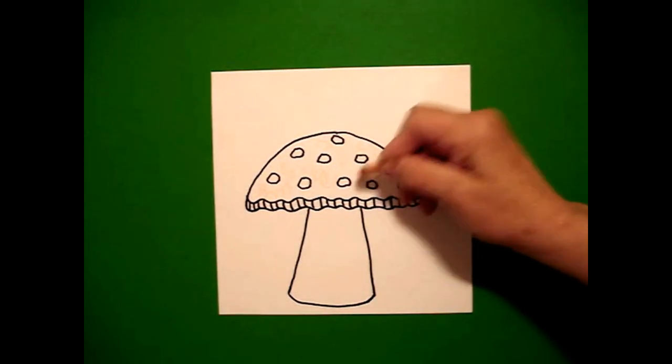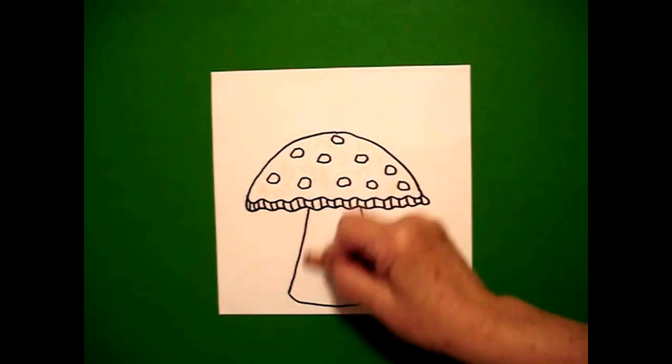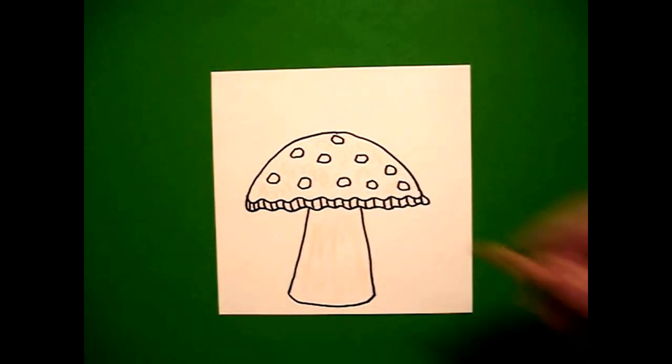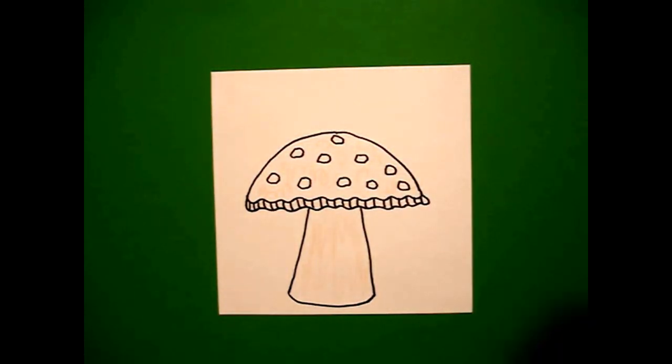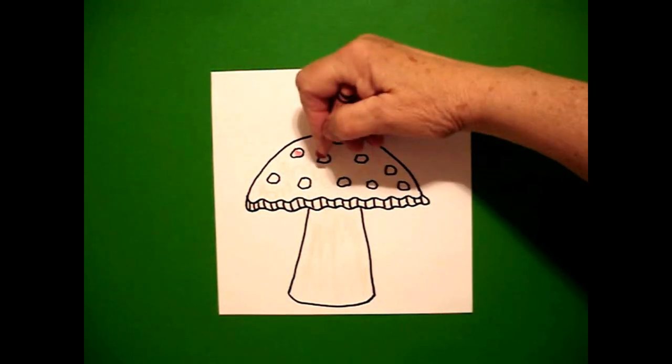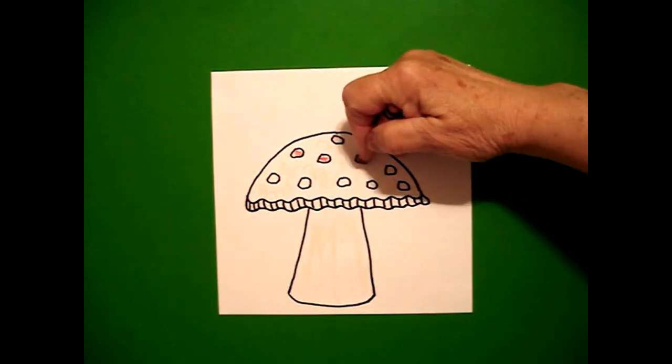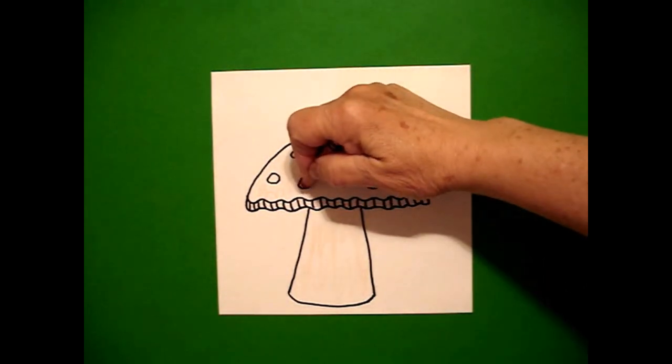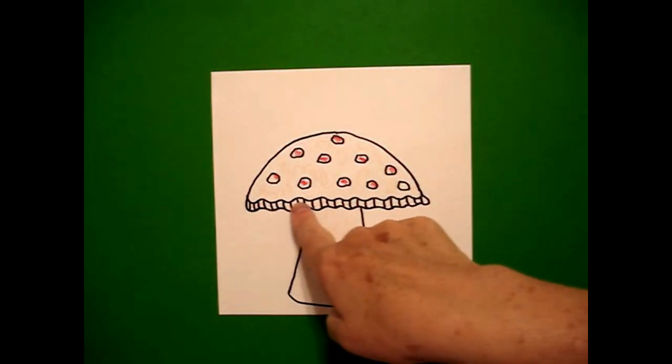just lightly color the top section and the bottom section down here. Then I'm going to take red and I'm going to color in my little round circle dots on the head and I'm going to leave this section white.